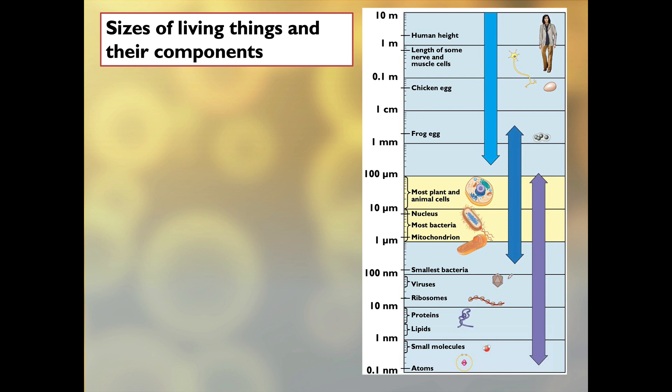Next we're going to look at the sizes of living things and their components. We're using the metric system, so everything is based on a factor of 10 on this scale of sizes. We have three different colored arrows covering different spans, with examples listed on the left. Starting at the big end, there are things we can see with our unaided eye — macroscopic forms of life. A little more than a meter, we have human height. A little less than a meter are the lengths of some nerve and muscle cells.